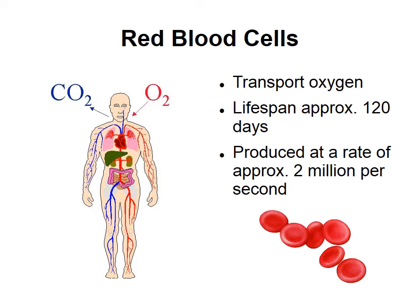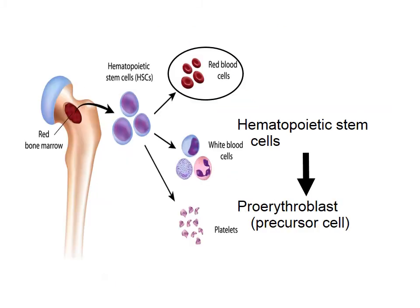However, this production rate can be increased by the body if needed. Erythropoiesis occurs in the red bone marrow. The process begins with the haematopoietic stem cells, which differentiate into a precursor cell called a proerythroblast.